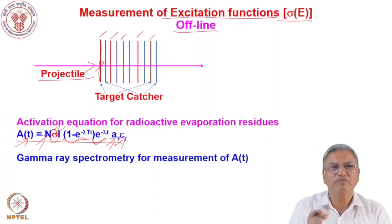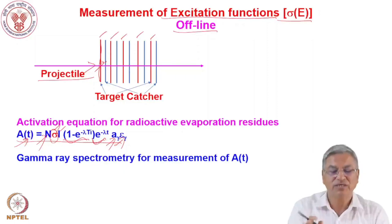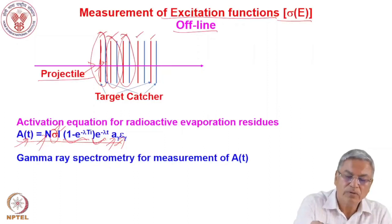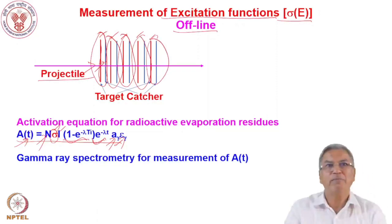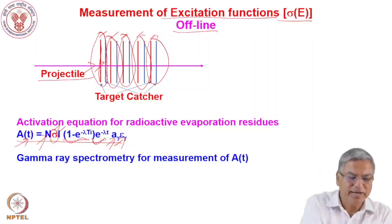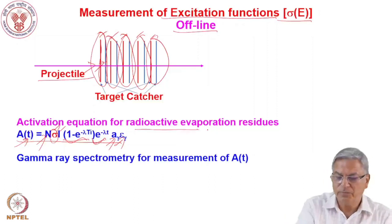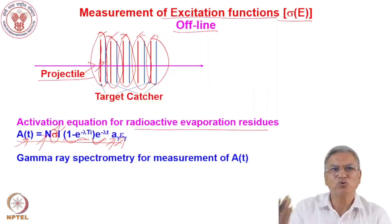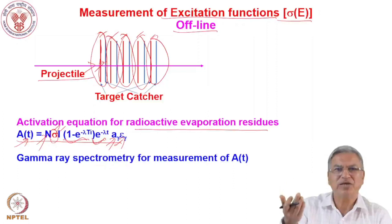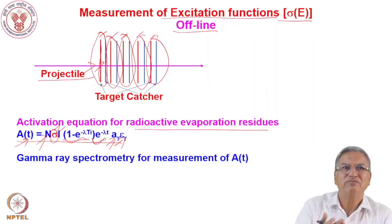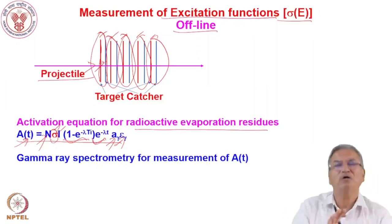You count the individual foils in a gamma spectrometry setup, measure the activity, and from the activity find the cross section at each energy. This allows measurement of the excitation functions for channels like (α,n), (α,2n), and (α,3n) — for example, Nb-93+α producing Tc-97, Tc-96, Tc-95, and Tc-94 as radioactive evaporation residues. This is how offline experiments for measurement of radioactive evaporation residues are done.